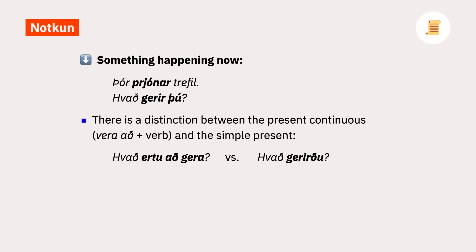As the name suggests, the simple present tense can be used to talk about something that's happening now. So far we've only been using the present continuous to form the present tense. Like in English, the present continuous is normally used to talk about something that's happening right at this very moment. The examples here show this distinction.